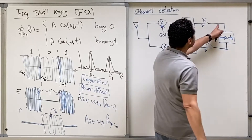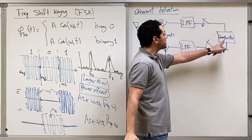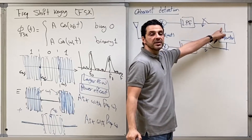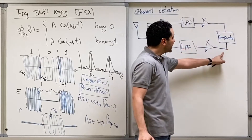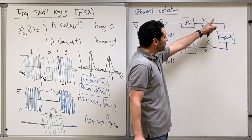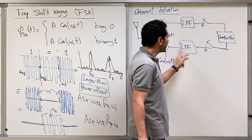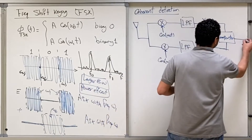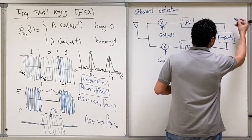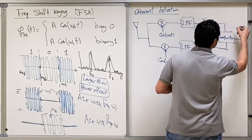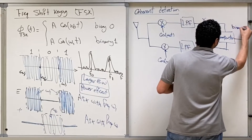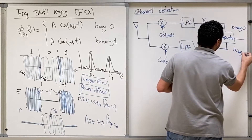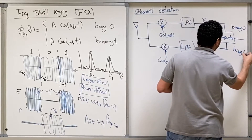If the signal in the first branch is stronger, you decide on binary zero. If the signal in the second branch is stronger, you decide that the received signal was binary one. So basically, if the upper branch signal is stronger, it's binary zero; if the lower branch signal is stronger, it's binary one.